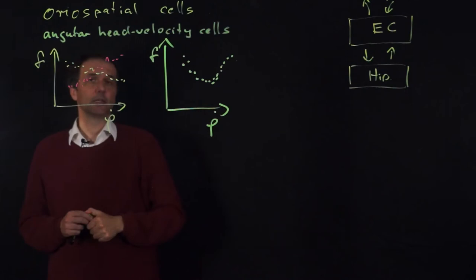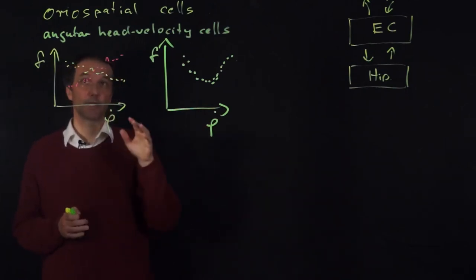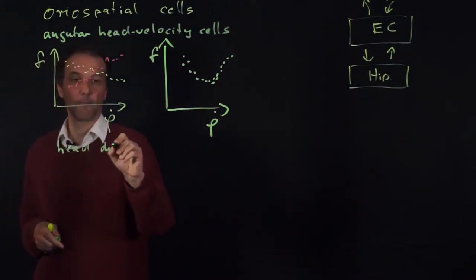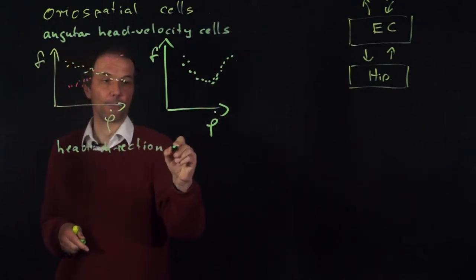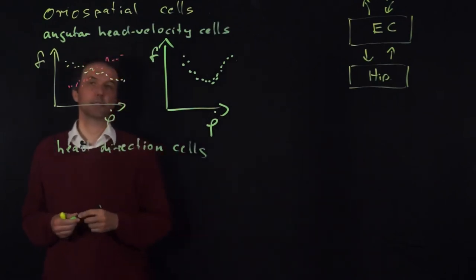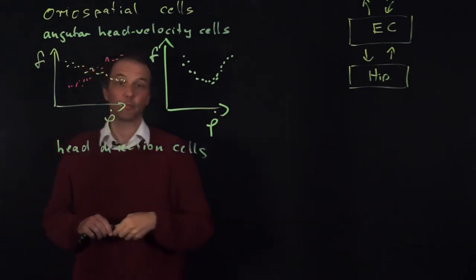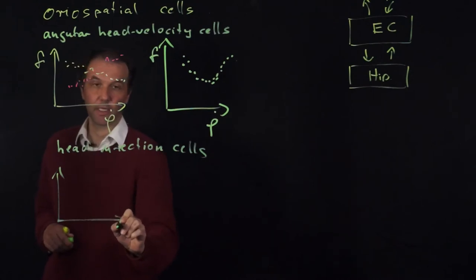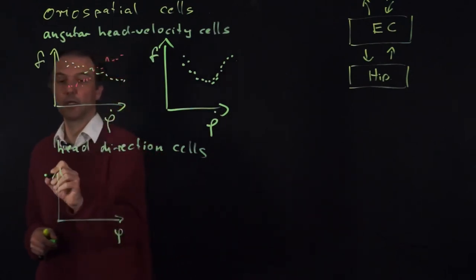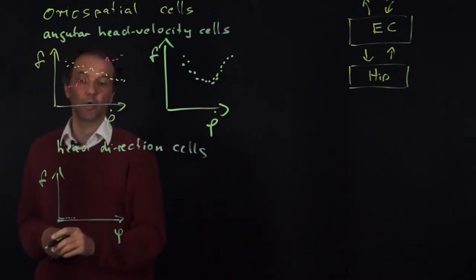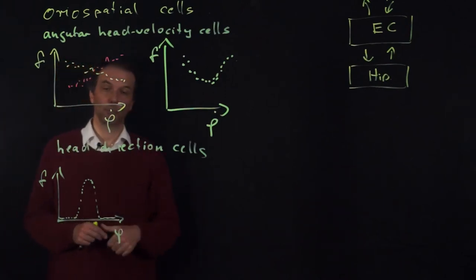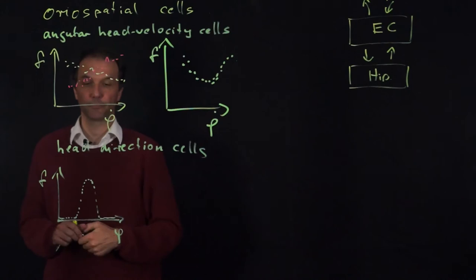Angular head velocity cells need input from the vestibular system and they project to the next type of cells: the head direction cells. These cells are tuned to the heading direction of the rat and ideally do not depend on anything else. The firing frequency is typically low for most directions, then goes up and then down again, so that each cell is tuned to a particular orientation.